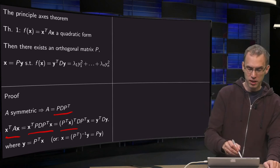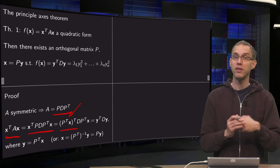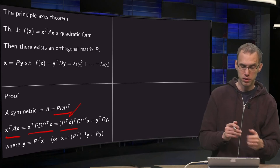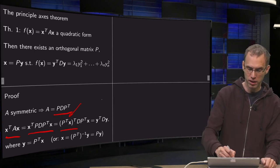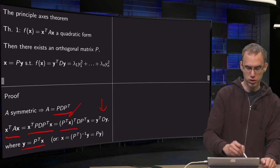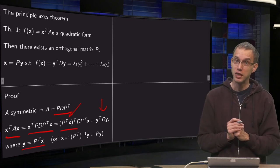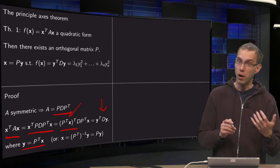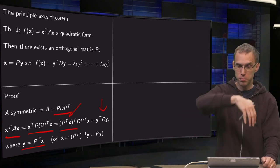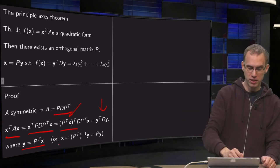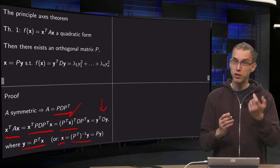And then we see that if we choose what is between the brackets here as our y, then we get y transpose times D times y over here. If we make this choice, y equals P transpose times x, or equivalently, you can put the P transpose to the other side, then you get x equals P transpose inverse times y.